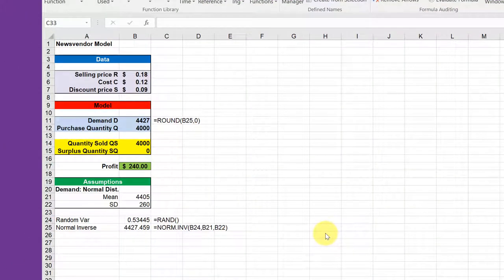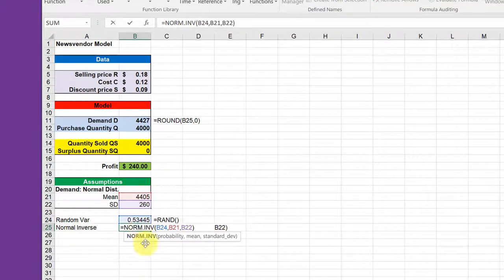Excel has a good tool for generating random numbers - the RAND function, which is just R-A-N-D with opening and closing parentheses with nothing in between. For dealing with the normal distribution, if we have a probability, the function we need is the norm inverse. The arguments for norm inverse are a probability, the mean, and the standard deviation.